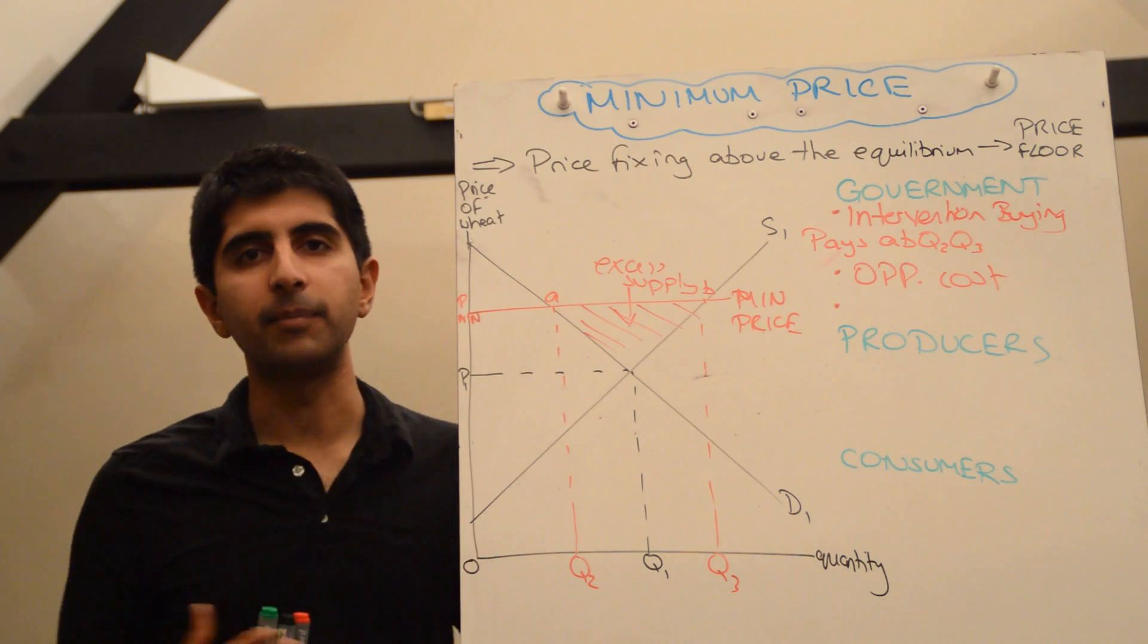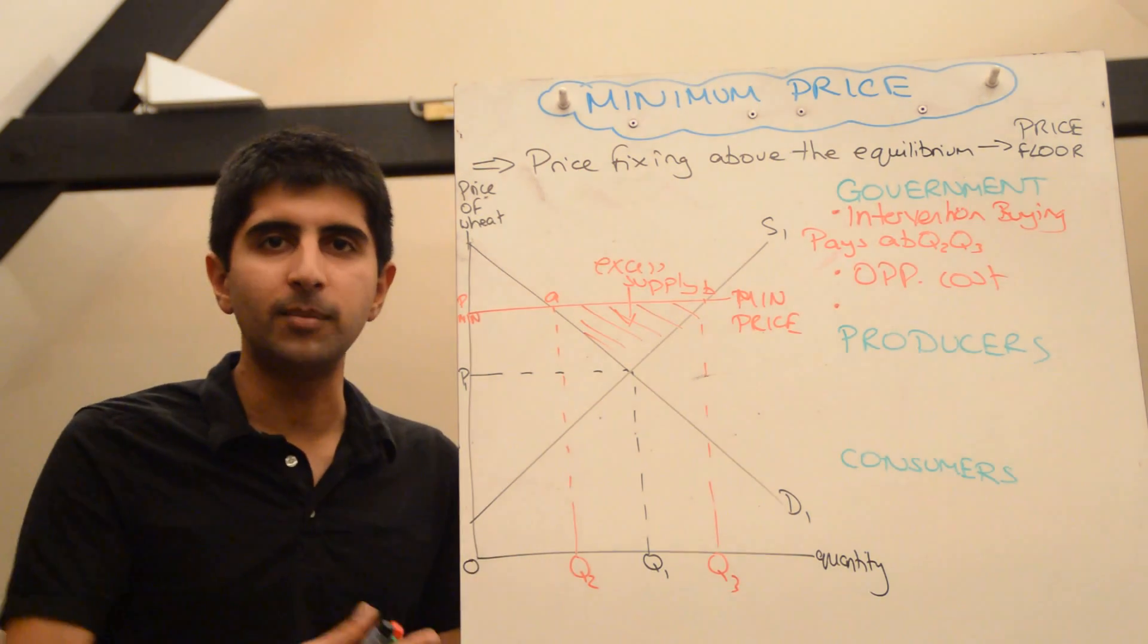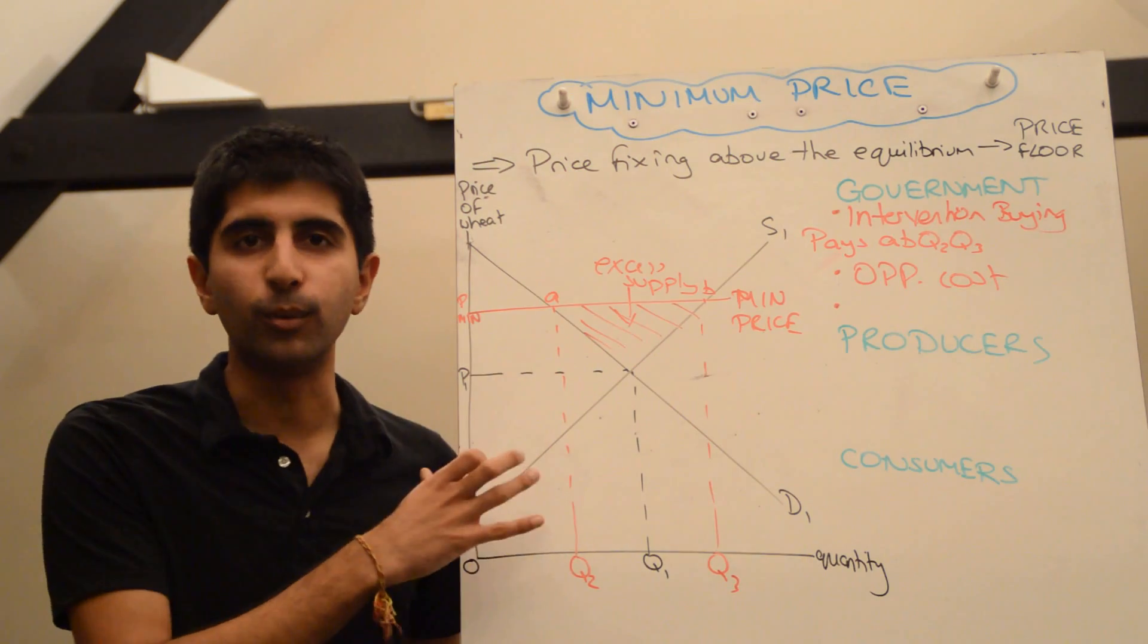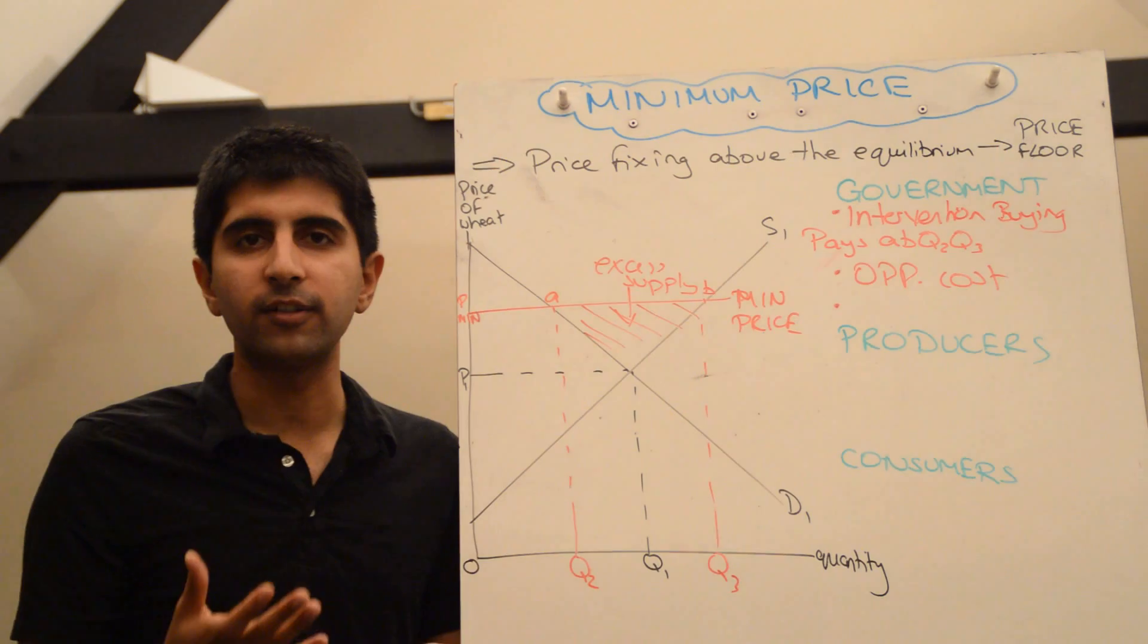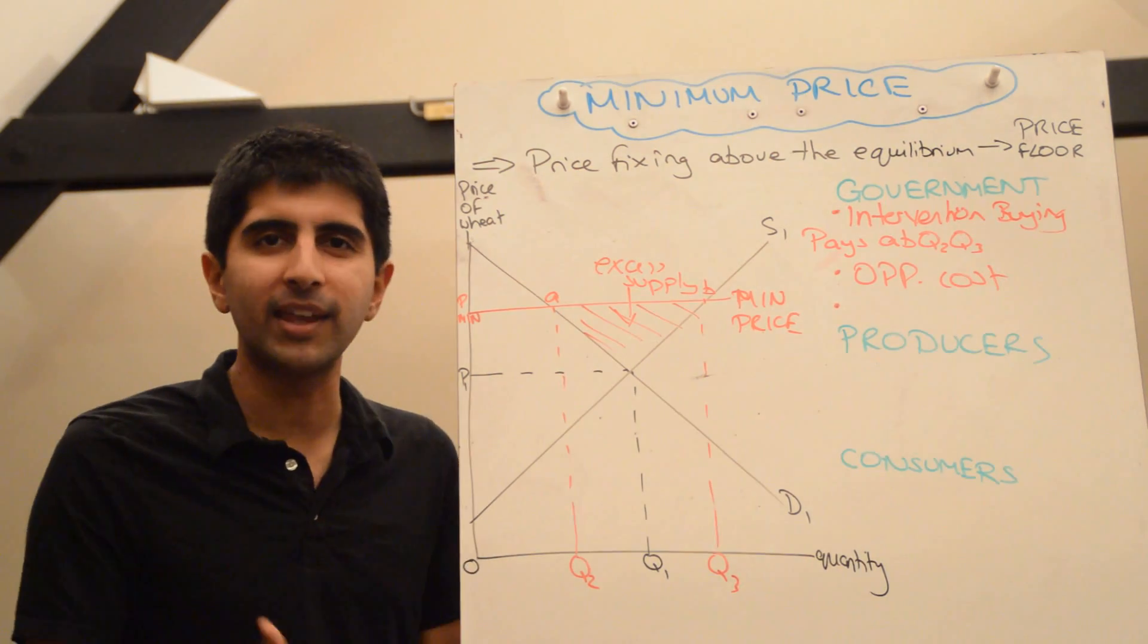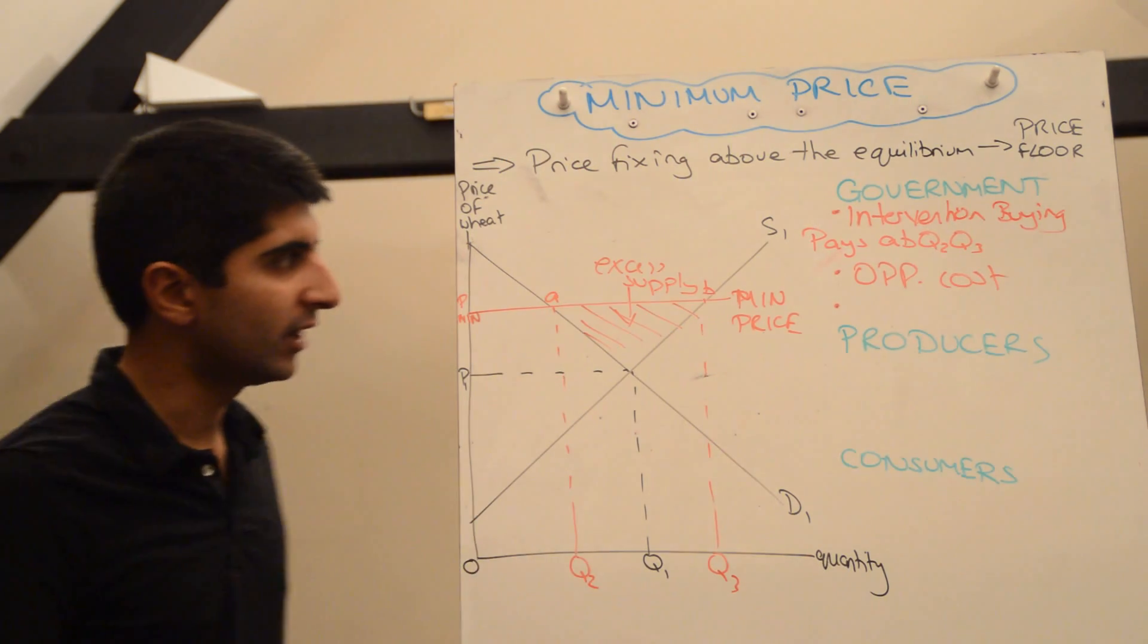The temptation for governments is to just buy at PMIN and then sell in the domestic economy below PMIN to get rid of it. At least then they're earning some revenue. But the problem with that is they're breaking their own rules. If they then end up selling below the minimum price, what good is that? So the temptation is to do that, but that's not actually allowed.